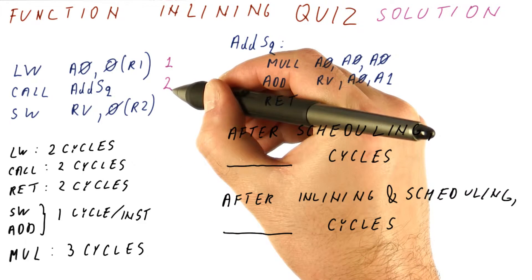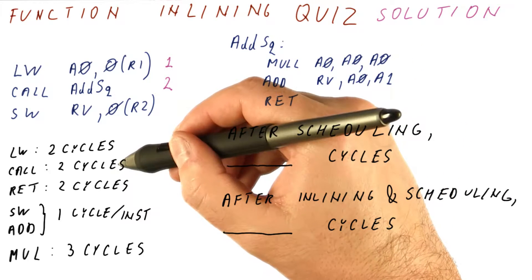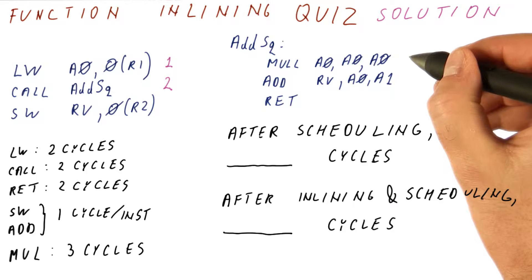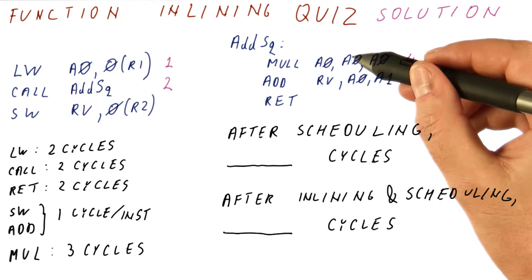In the second cycle, however, we can do the call. The call also takes two cycles. So we can execute this instruction in cycle four. At that time, a zero is available.